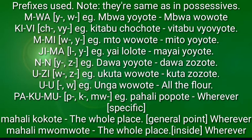The Ji-ma class uses 'lo' and 'ya': yai lolote, mayai yoyote. The N class uses 'ya' and 'za': dawa yoyote, dawa zozote. The U-zi class uses 'wa' and 'za': ukuta wawote, kuta zozote.